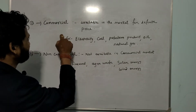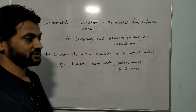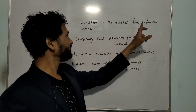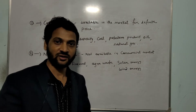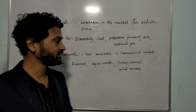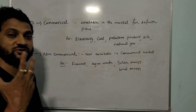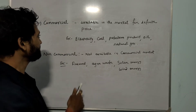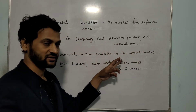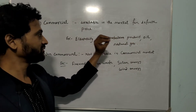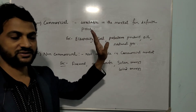Next is another classification — commercial source of energy and non-commercial source of energy. Commercial source of energy is what is available in the market for a definite price, that is available in the commercial market. We have to pay something for it, like electricity — we pay in terms of units or kilowatt-hours — coal, petroleum products, oil, and natural gases. To use that kind of energy, we have to pay something.